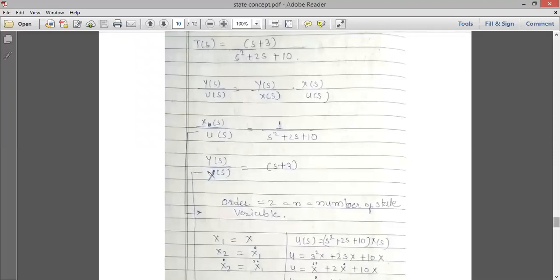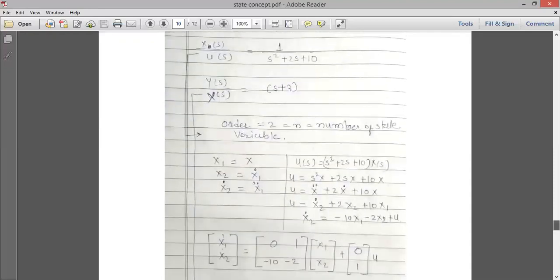Now when we split it, how to choose the number of state variables? For choosing the number of state variable: number of order is equal to the number of state variables. For this example we have the order is 2, so the number of state variables is 2. So what we have to assume: x1 is equal to x and x1_dot is equal to x2.